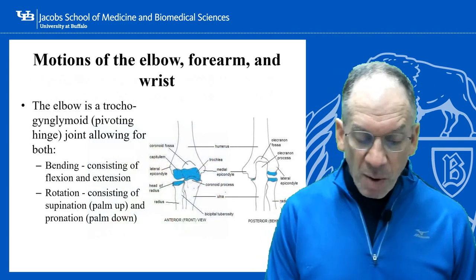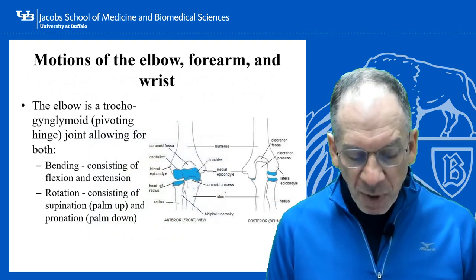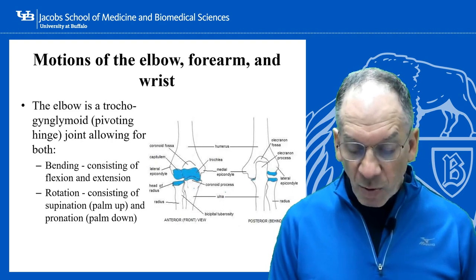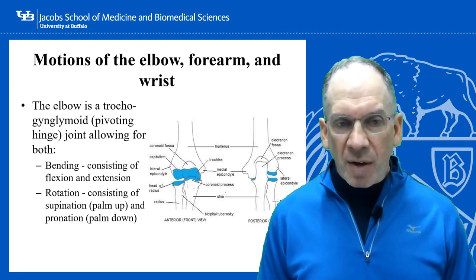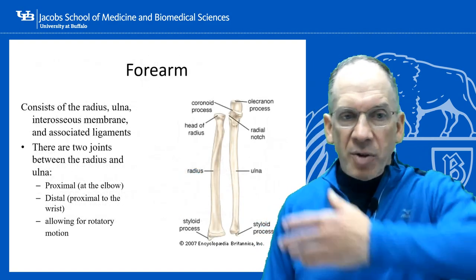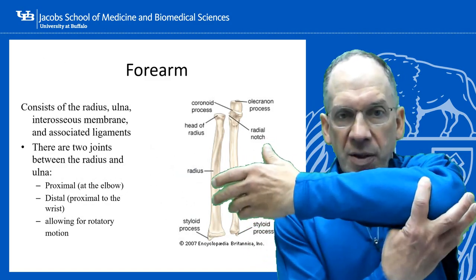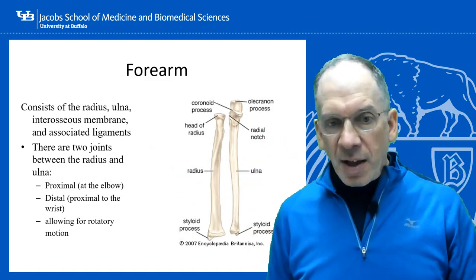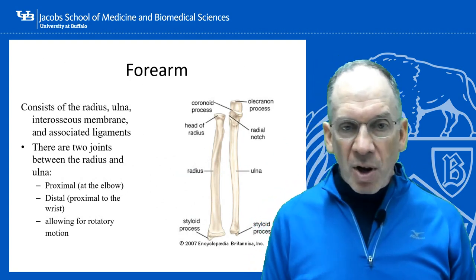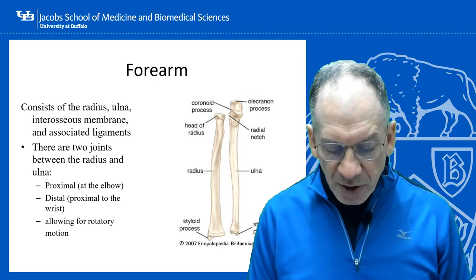Motions of the elbow, wrist, and forearm. The elbow is a trochoginglymoidal joint — basically a pivoting hinge — and it allows for flexion, extension, and rotation. I tend to think of the forearm as one joint instead of two, because there are two articulations but they're both between the radius and the ulna: one at the elbow and one at the wrist, and they allow for the radius to rotate almost completely around the ulna, with on average 150 to 160 degrees of forearm rotation.